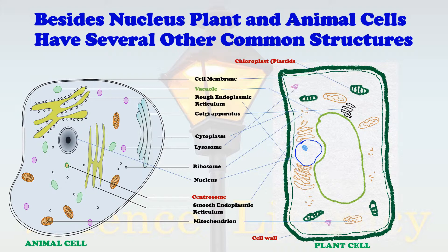Now, what are the common structures found in both animal and plant cells? The first is the nucleus — an animal cell has a nucleus and a plant cell also has a well-defined nucleus. Besides this, both have a cell membrane: in animal cells it is the outermost membrane, while in plant cells the cell membrane lies beneath the cell wall.